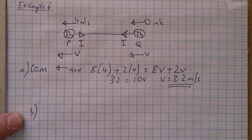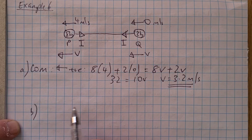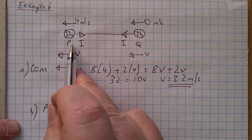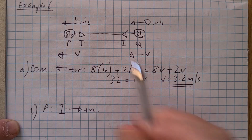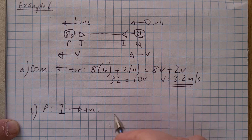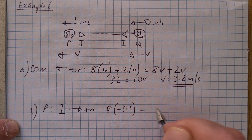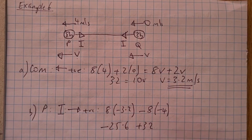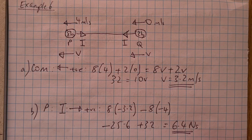For part B, we find the magnitude of the impulse transmitted through the string when it goes taut. We can consider either P or Q; the book uses Q, so I'll use P to show the same answer results. Concentrating on particle P, the impulse is to the right, so we take that as positive. The initial velocity of P was to the left, so it's negative. Impulse = 8 × (−3.2) − 8 × (−4) = −25.6 + 32 = 6.4 Newton seconds. This confirms the impulses are equal and opposite, so you can look at either particle.